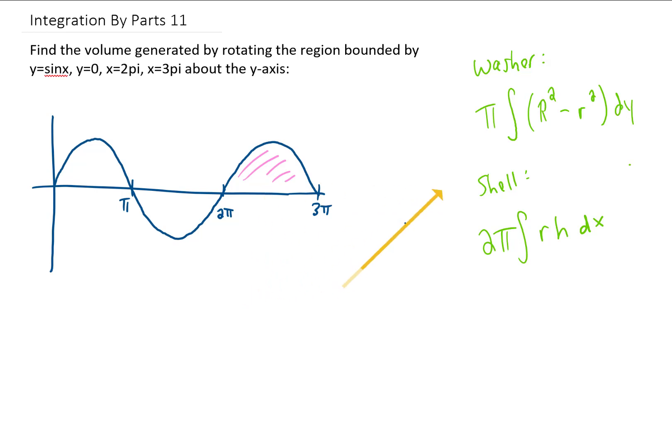So we're going to rotate this region right here about the y-axis. And if you'll recall, we could do this a couple different ways. There's a washer method and there's a shell method. If we use the washer method, we would have to split up our region just like this and we would have to then rotate this region about the y-axis.